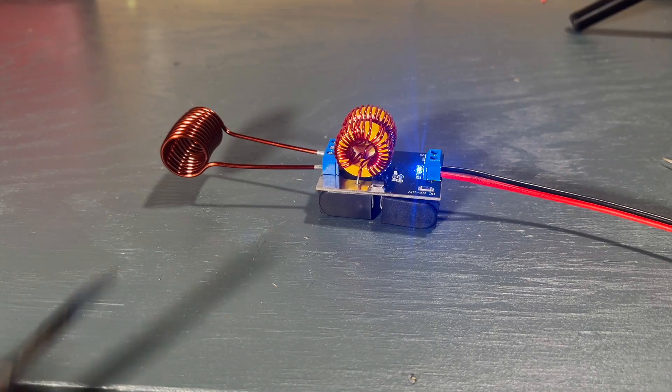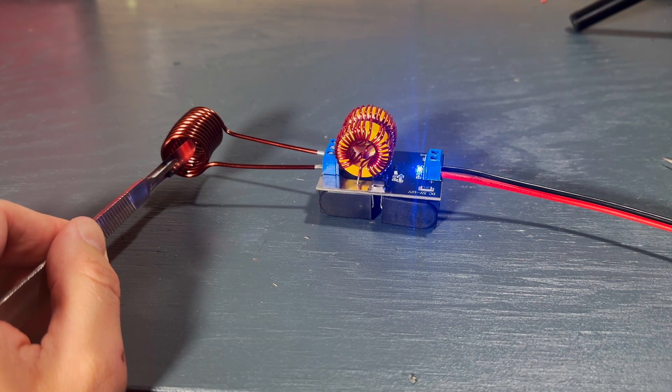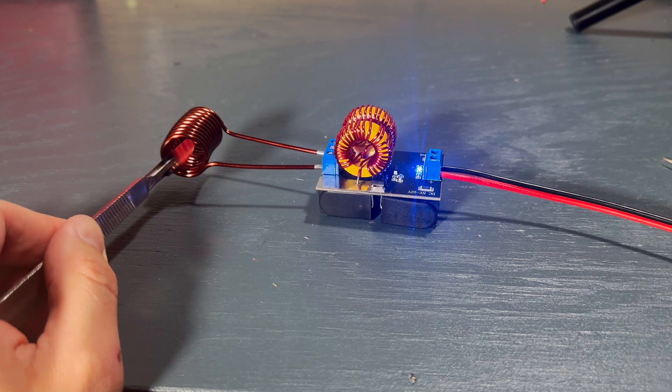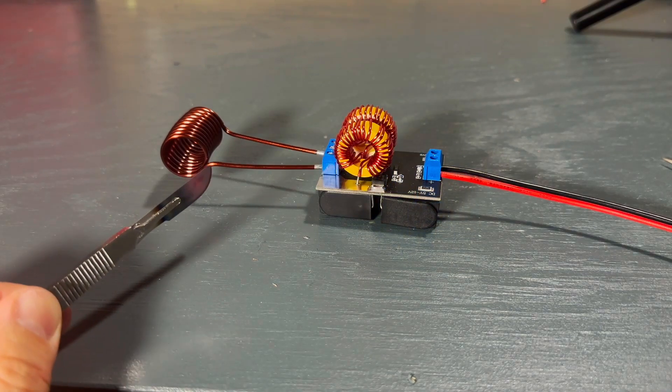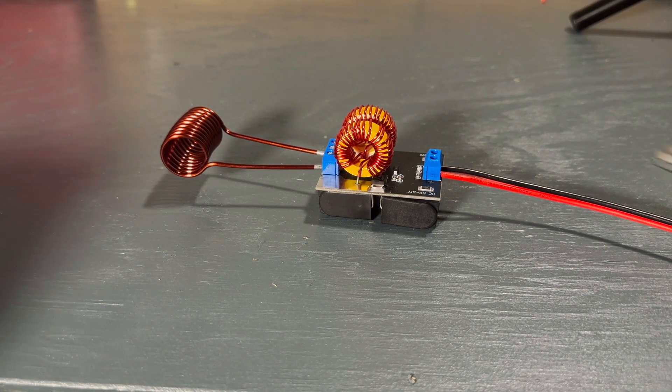When you push down on the foot pedal a blue light will come on on the inductor letting you know that it's working. When you let go of the foot pedal the blue light goes off and it stops inducting heat. And that's all it takes to make an induction sterilizer.